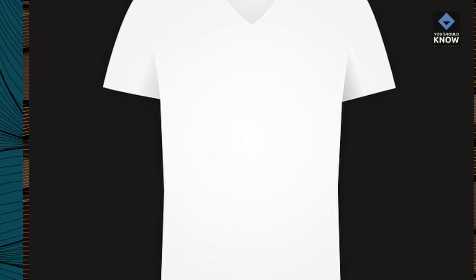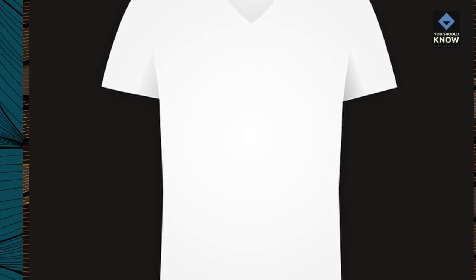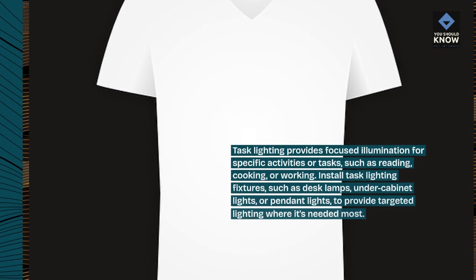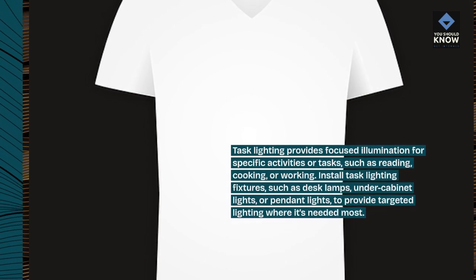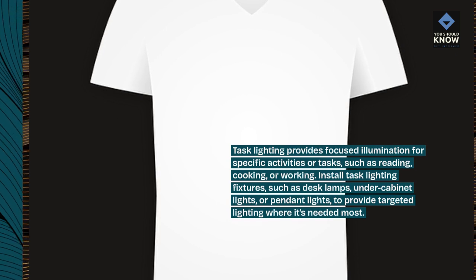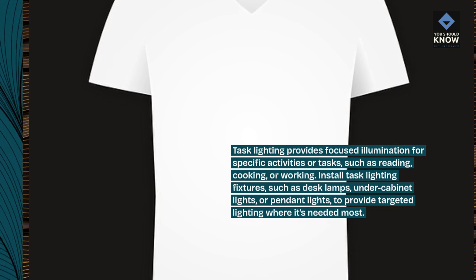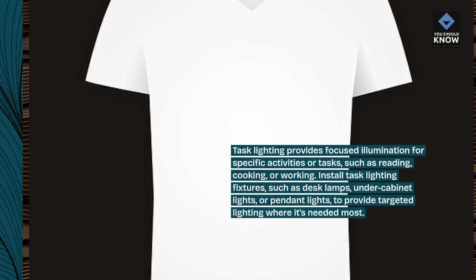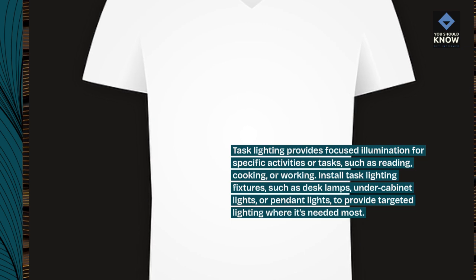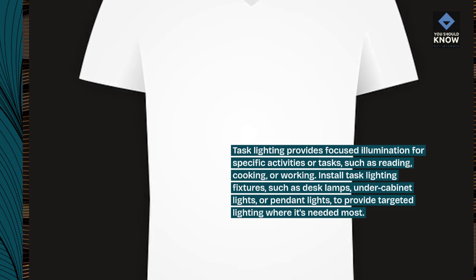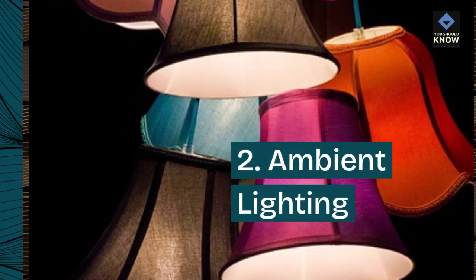Task lighting provides focused illumination for specific activities or tasks, such as reading, cooking, or working. Install task lighting fixtures, such as desk lamps, under cabinet lights, or pendant lights, to provide targeted lighting where it's needed most.